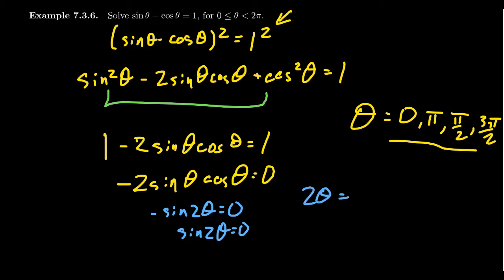For which then we get that 2 theta is going to equal, well, sine equals 0 at 0, so you take any 2π multiple of that, or sine equals 0 at π, so you're going to get π plus 2πk as well. So really, if you have 0 plus 2πk and π plus 2πk, those are just all multiples of π, so you can just simplify that as πk.